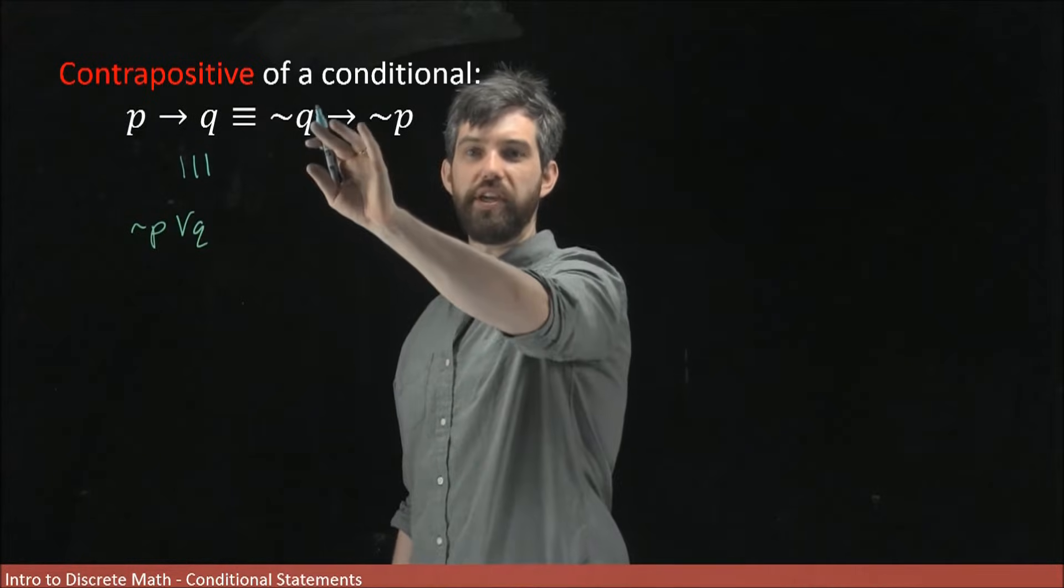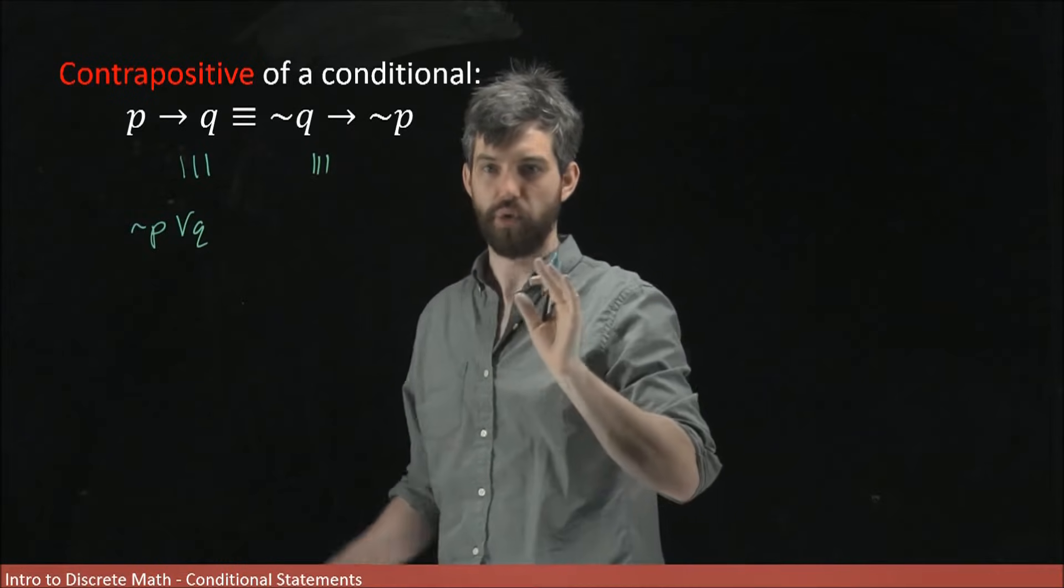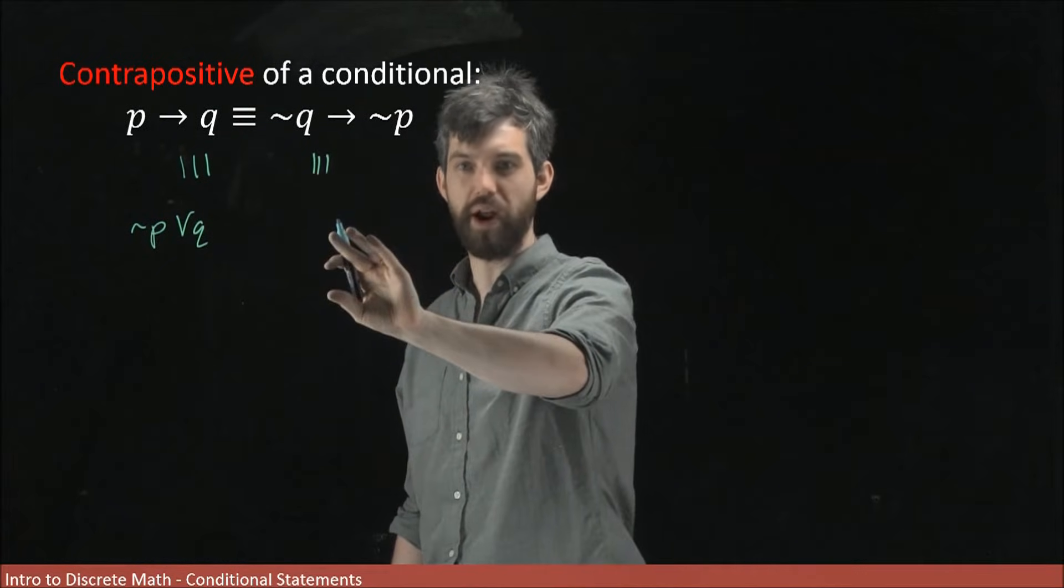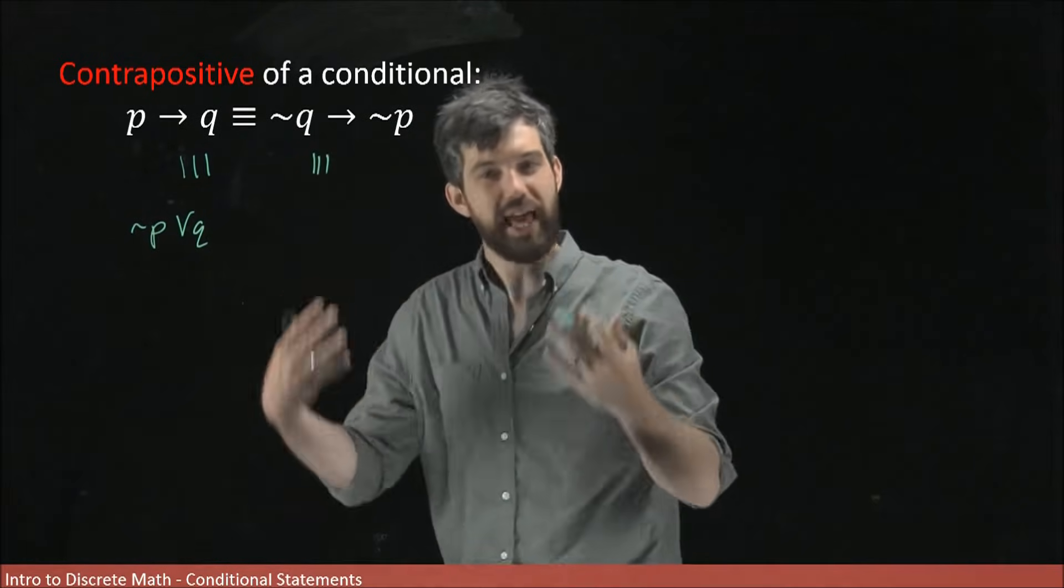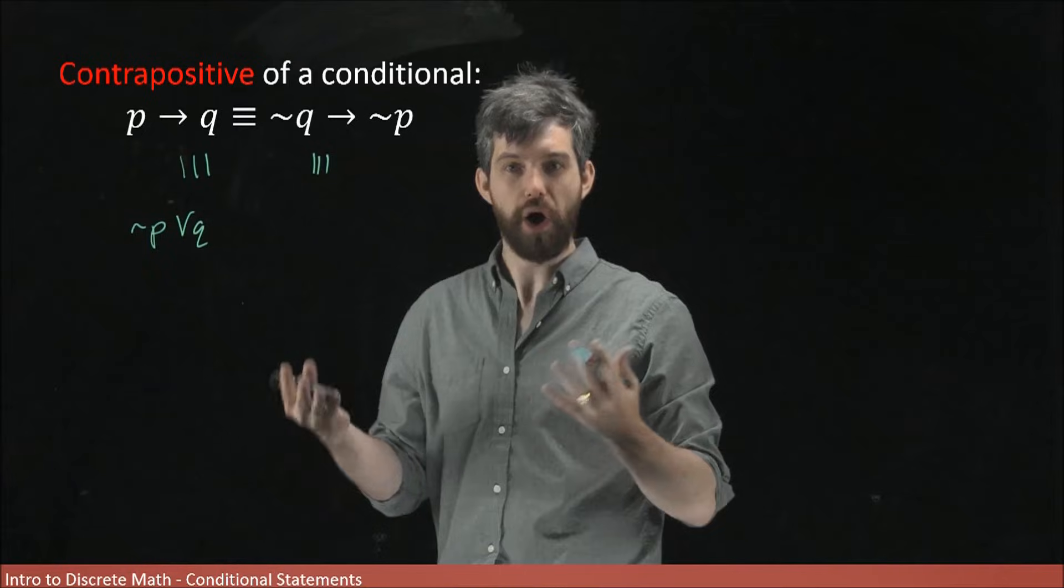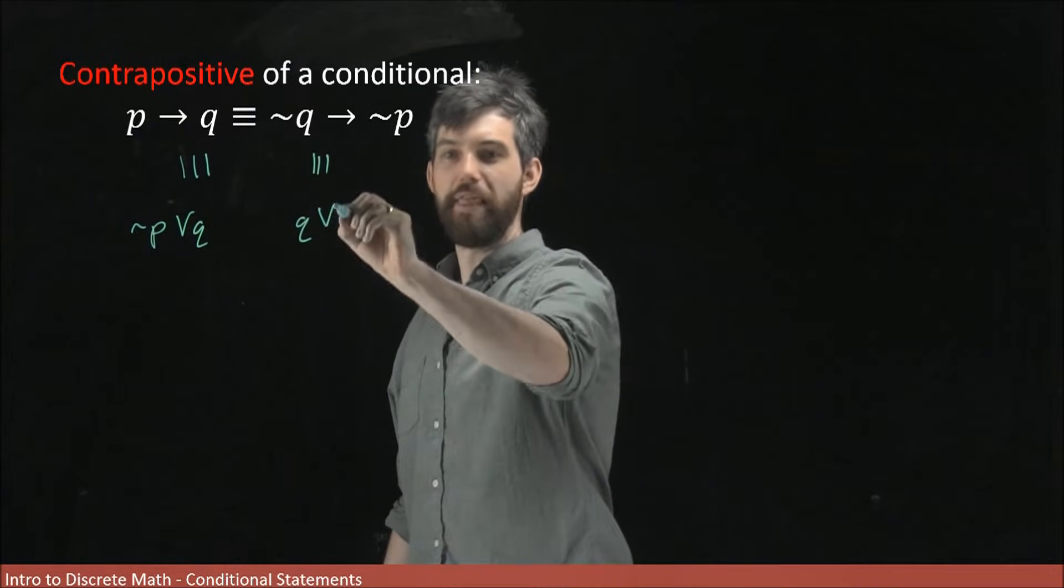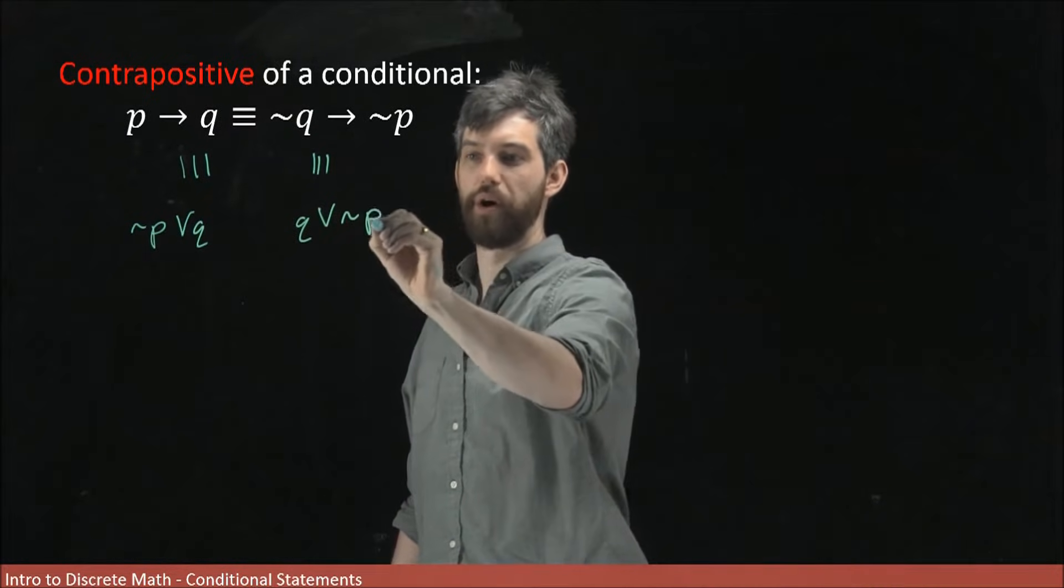Likewise, I can do something with the not Q implies not P. I'm going to try to do the same logical equivalence here. It's equivalent to a disjunctive, to an or statement, where first of all, I negate the first one. And if I'm negating not Q, that's a double negative, not not Q. So that's just going to be Q. And then Q or the second of the two, which is not P. So Q or not P.